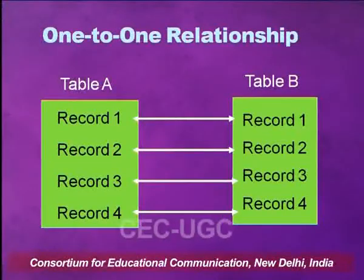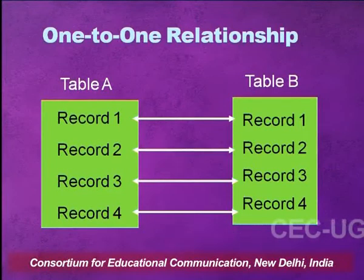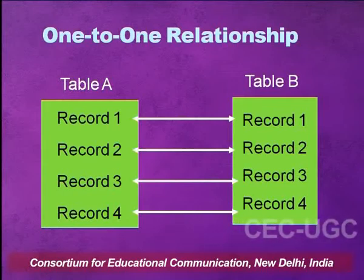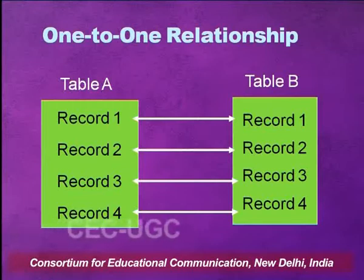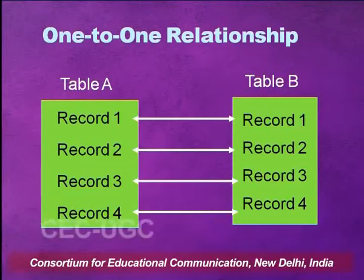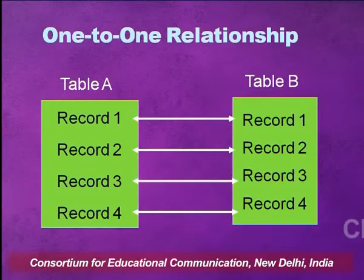There are different types of relationships. For example, one-to-one relationship. Here you have two tables, Table A and Table B, and each table has a number of records. In a one-to-one relationship, one record from the first table will be related to only one record in the second table. This can be explained by an example: a bank branch and a manager. The manager heads exactly one branch, and each branch will have only one person as the manager. This type of relationship is known as a one-to-one relationship.